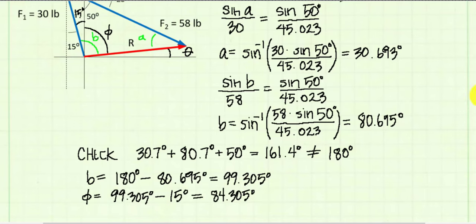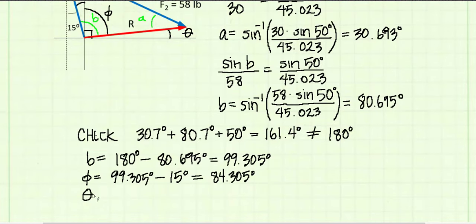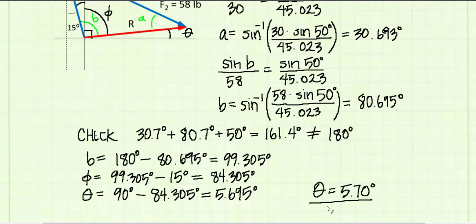And now, looking at the figure one more time, I see the angle theta is equal to this right angle minus the angle phi. So we find that the direction of the resultant vector is 5.70 degrees from the horizontal axis.